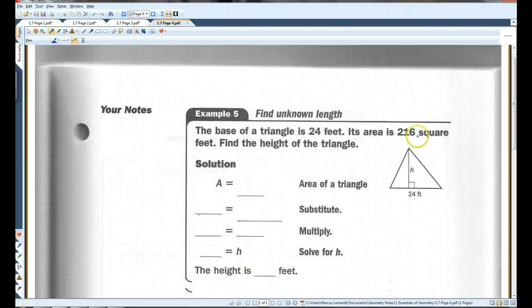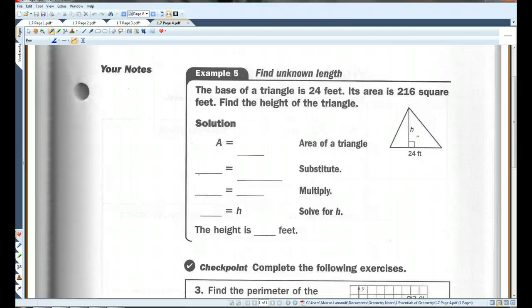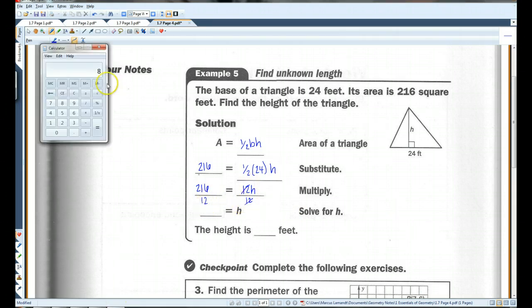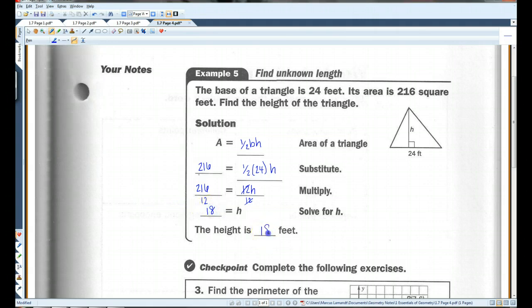One more page. The base of a triangle is 24 feet. Its area is 216 square feet. Find the height of the triangle. Now, as you hopefully remember, the area of a triangle is 1 half base times height. We're given that the area is 216. And we know that the base is 24. So, I'm just going to substitute what I know. 216, half of 24 is 12. Now, I'm going to divide both sides by 12. 216 divided by 12. Let's get out the calculator again. H is 18. So, the height is 18 feet.